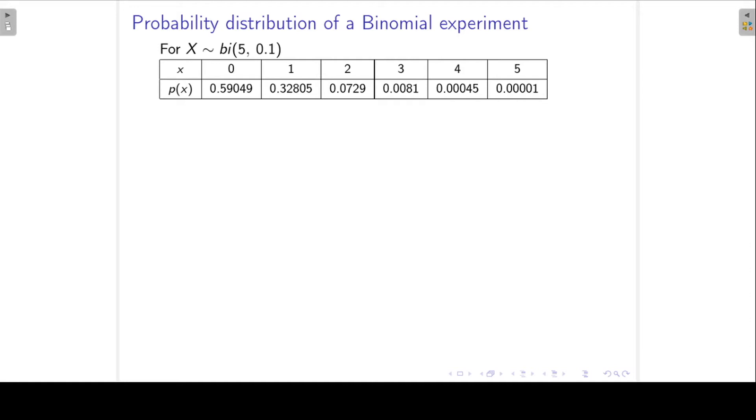We can also express the distribution of this x in formula form. So here you can see that my n is 5, my p, my success probability, is 0.1, and my probability for a failure is 0.9.